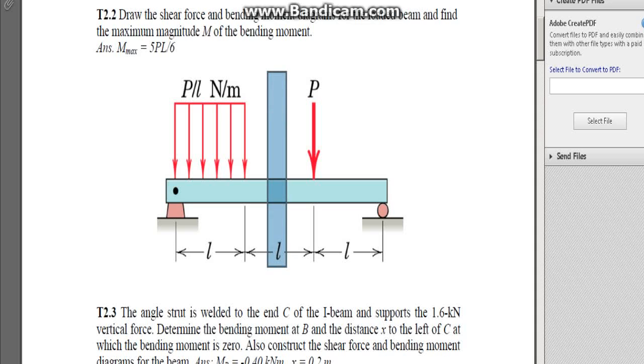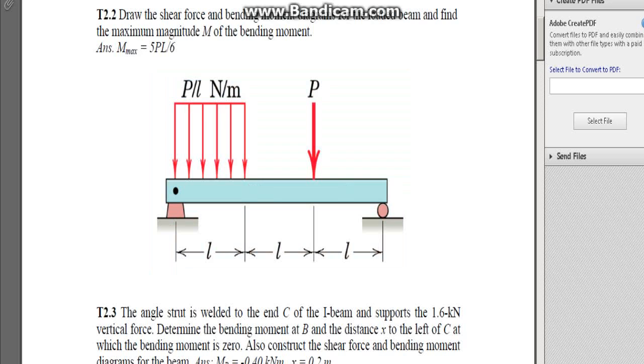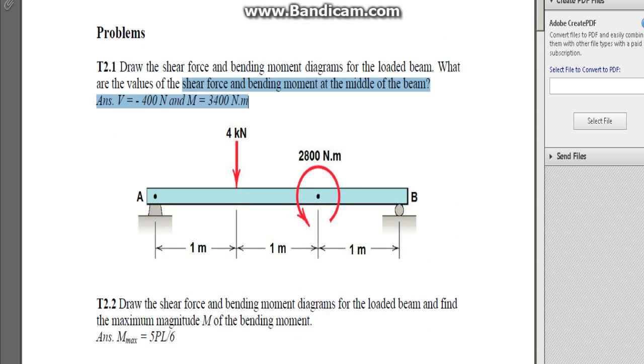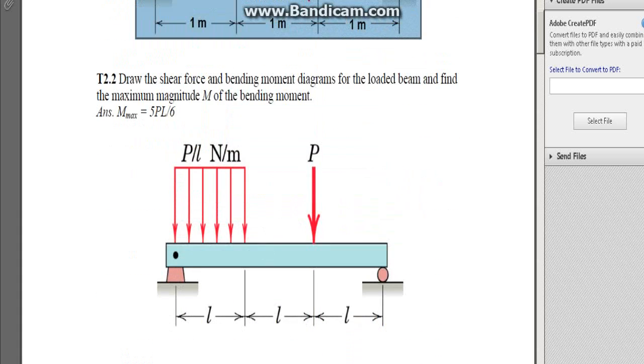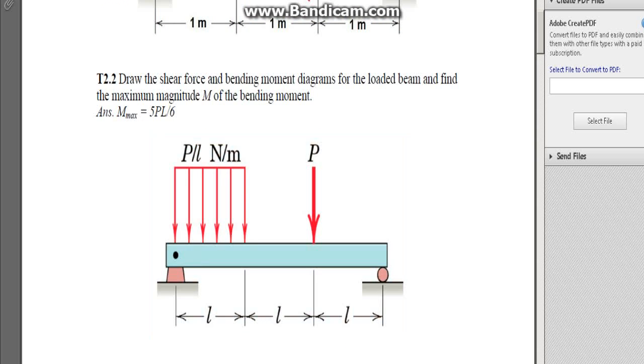The question is asking what is the maximum magnitude of moment on this beam. To work this out we need to actually draw the bending moment diagram first. This question is different from last week's question where we were asked what was the shear force and bending moments in the middle. Now we're looking at the actual maximum magnitude of the moments on this beam.